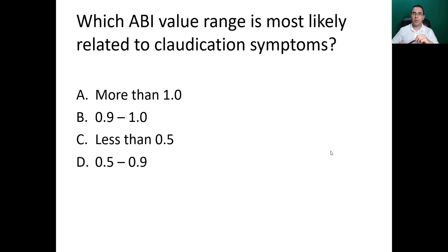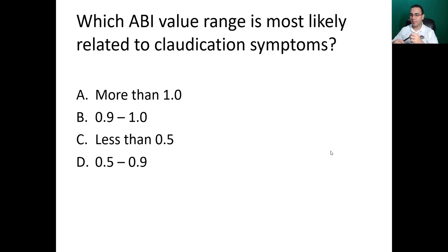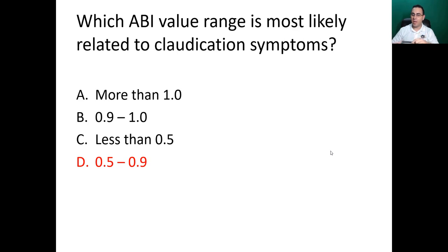Which ABI value range is most likely related to claudication symptoms? This is something you need to remember. The answer is 0.5 to 0.9 — that is the ABI value range for claudication.